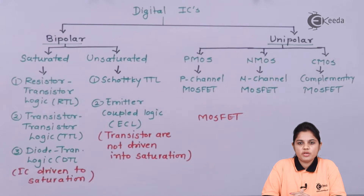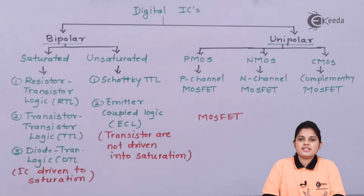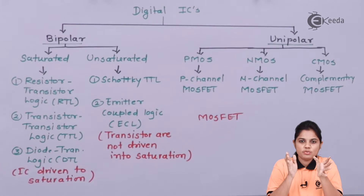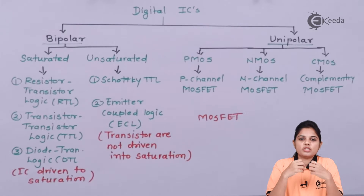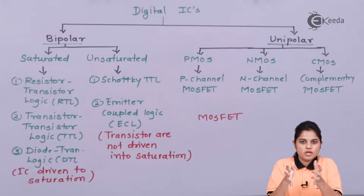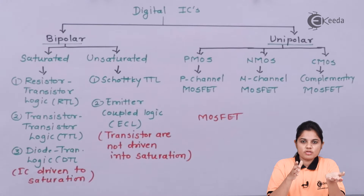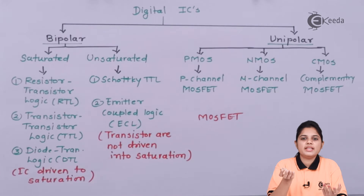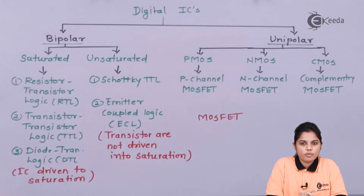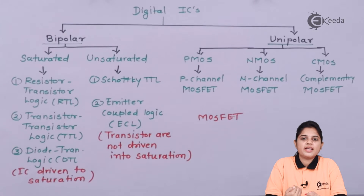The difference between bipolar and unipolar relates to how current flows in the device. In a BJT — bipolar junction transistor — the electric current generated can be because of the movement of electrons or because of the movement of holes. That means we are working on both polarities: electrons carry negative charge and holes carry positive polarity. Due to the movement of both, electric current is generated, so the device is called bipolar.